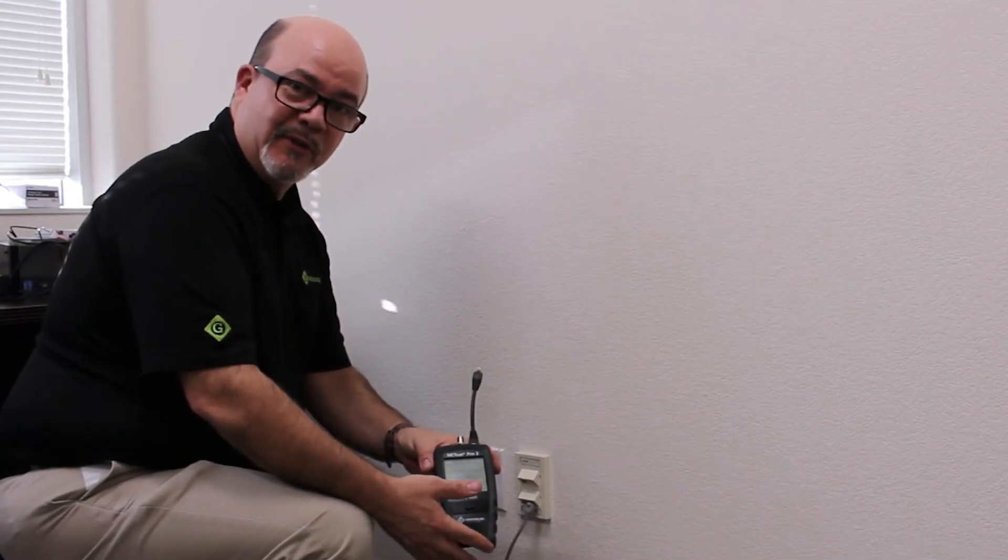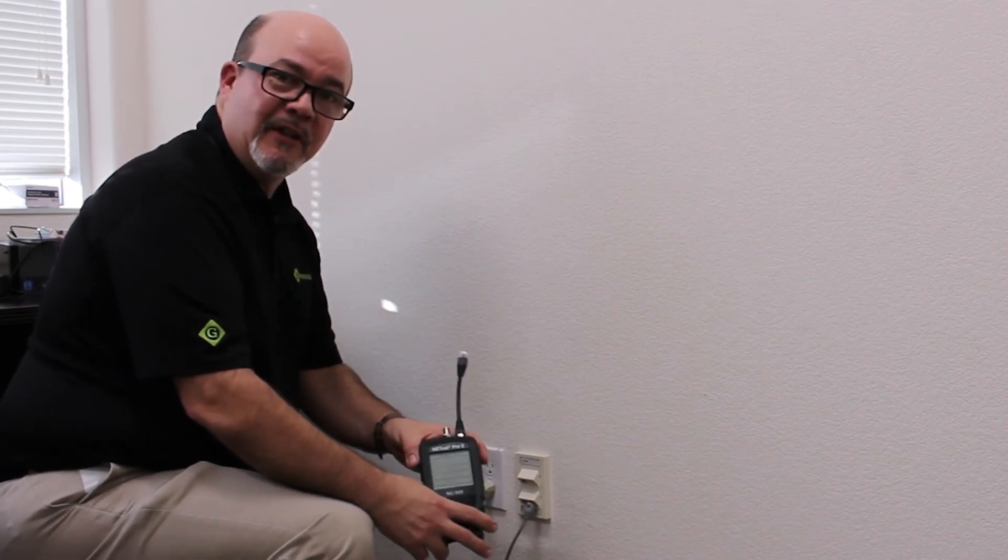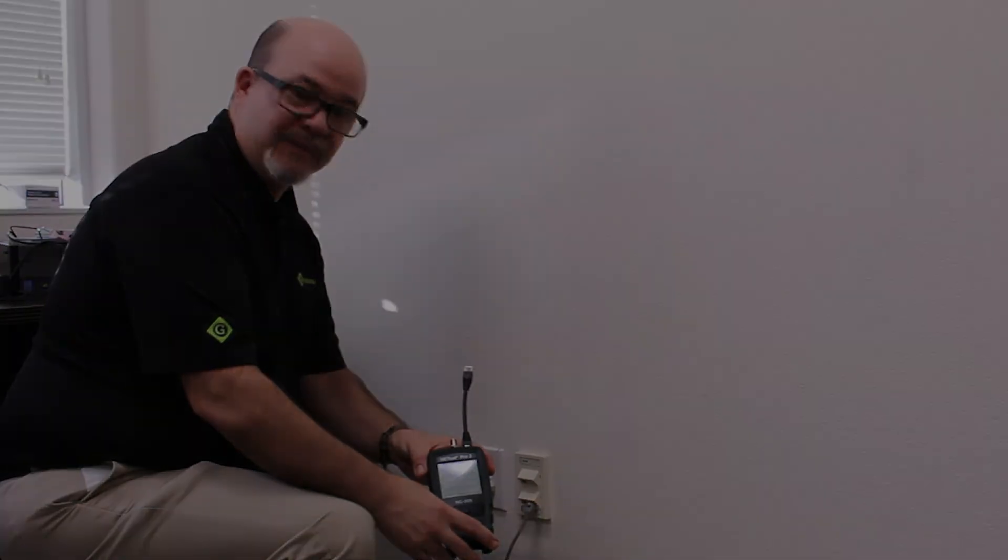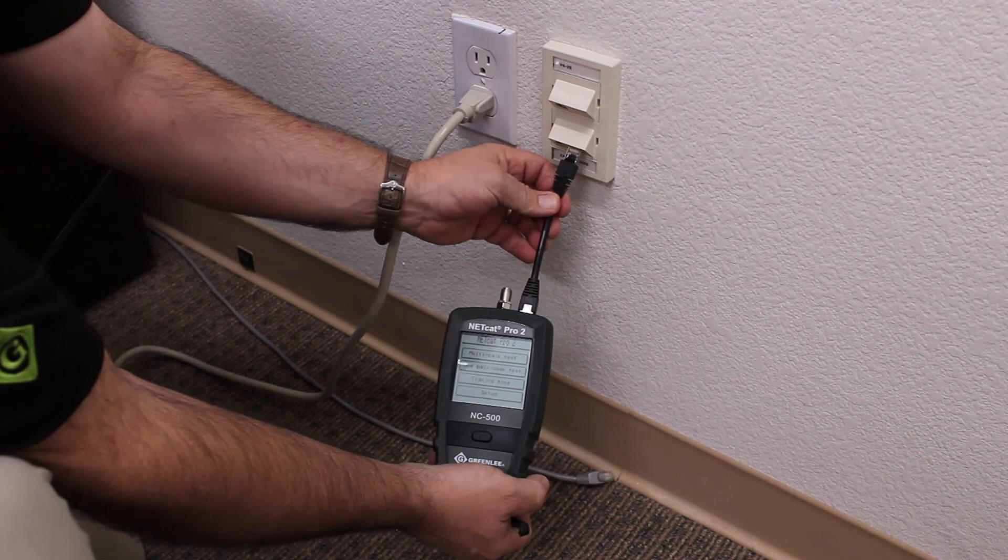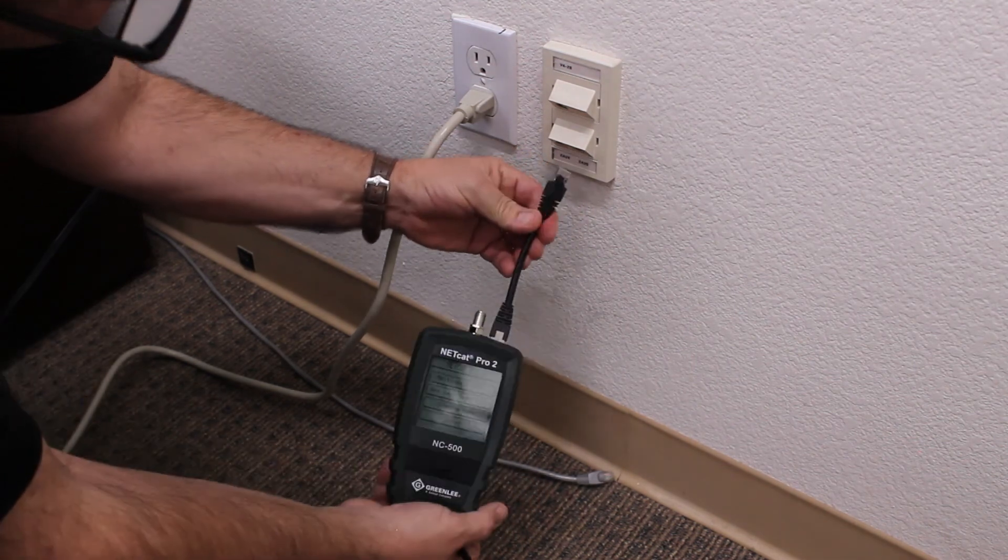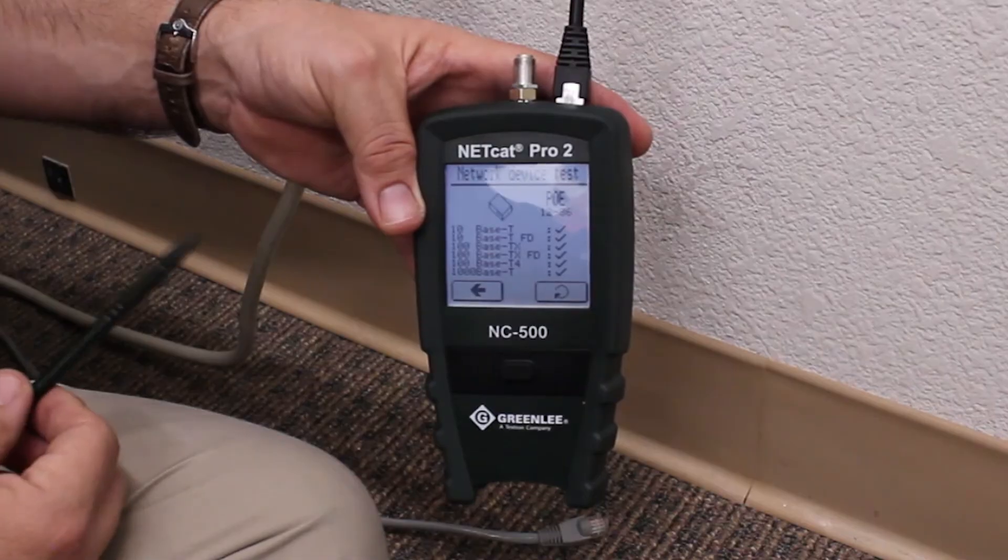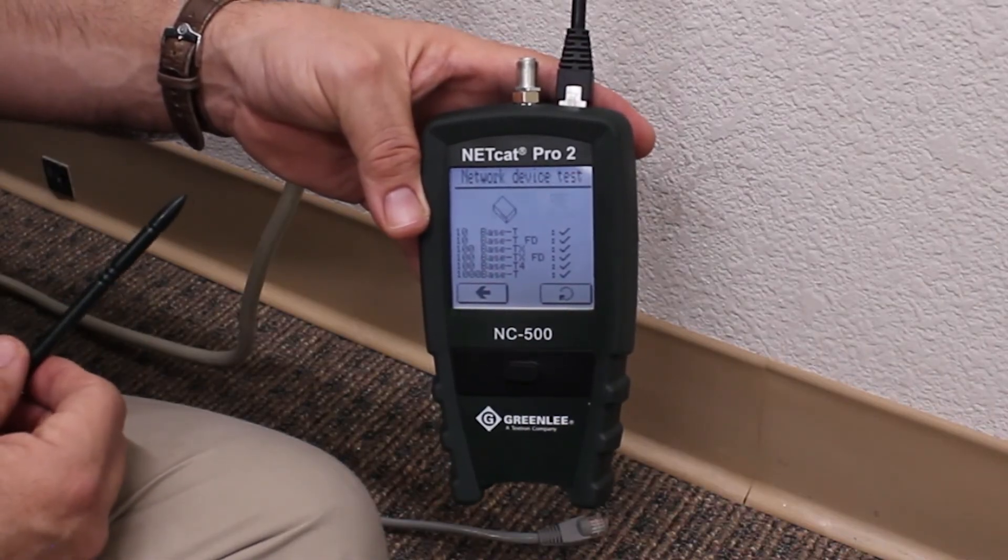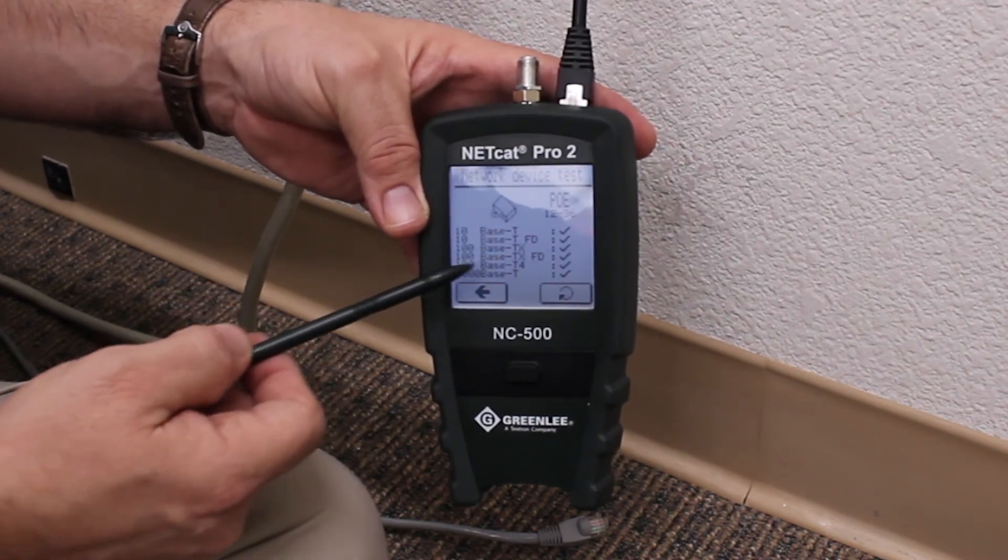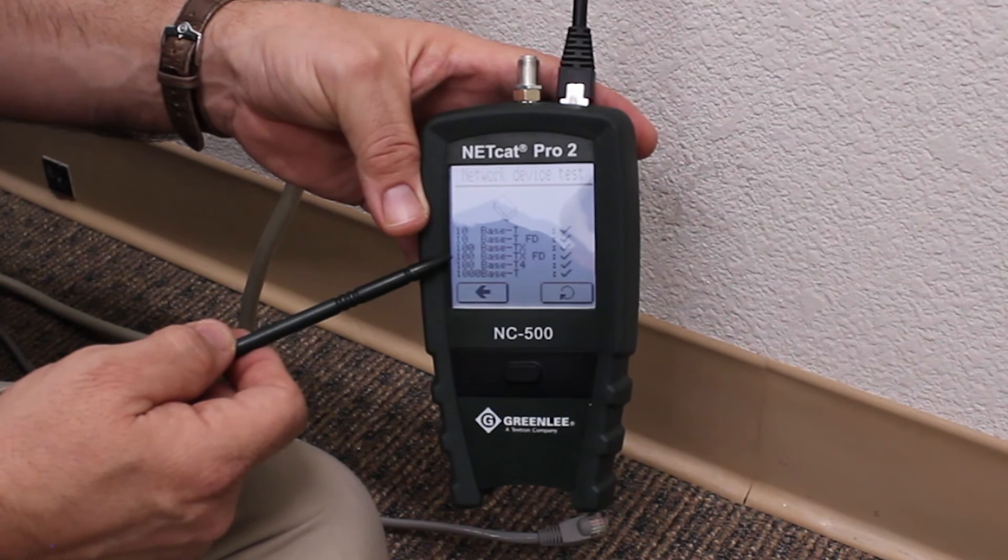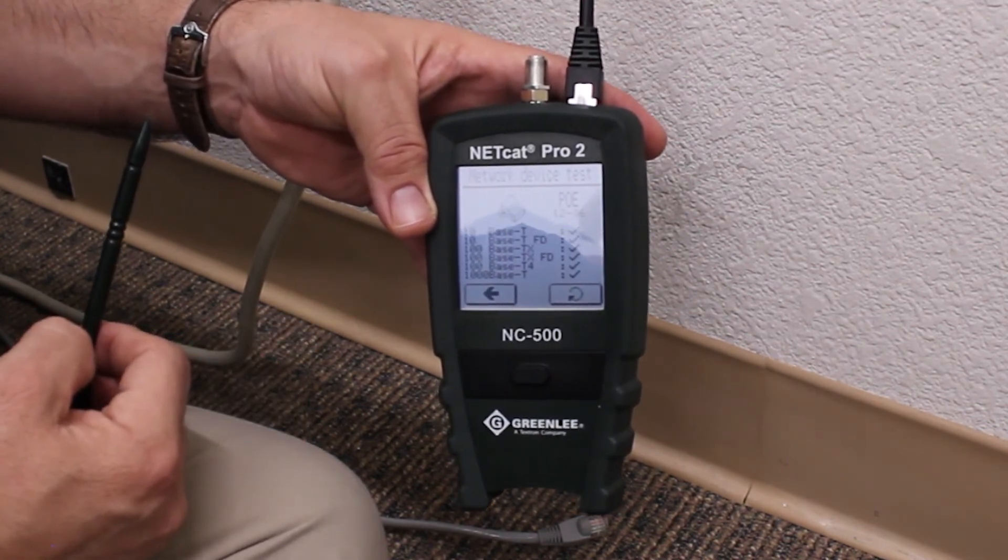The NC500 test unit is able to detect where a network device is plugged into either a hub or a switch. To initiate the test, plug the NC500 into the port and press the multi-pair test switch. This network cable is active. There is active data coming through this port. The unit can transmit and receive both in 10 base-T, 100 base-T, 100 base-T 4 wire, and 1000 base-T gigabit.